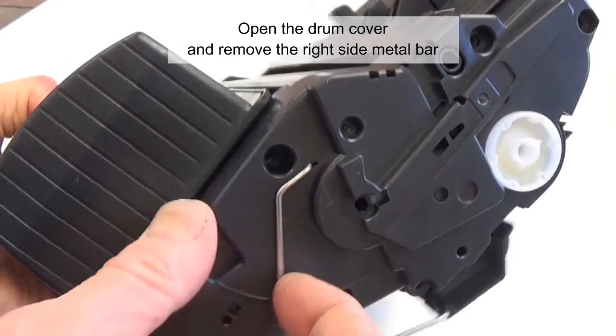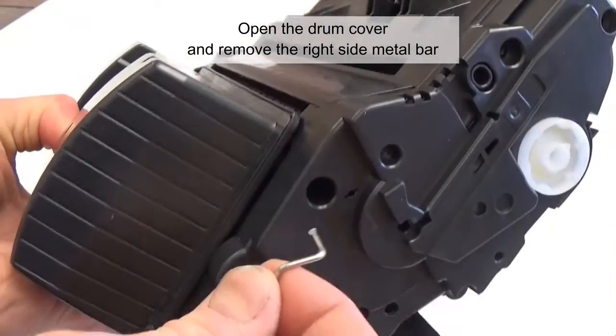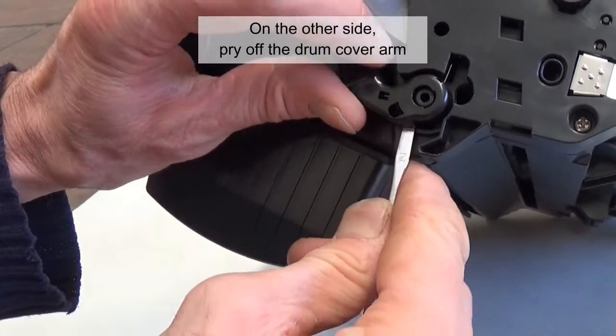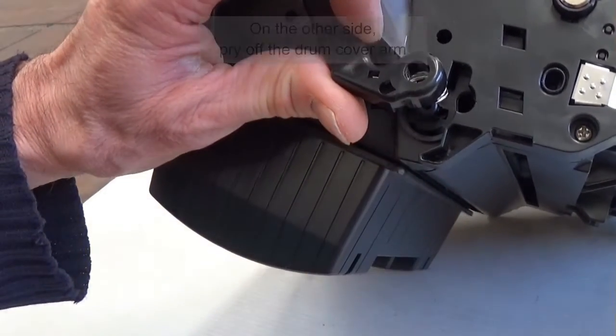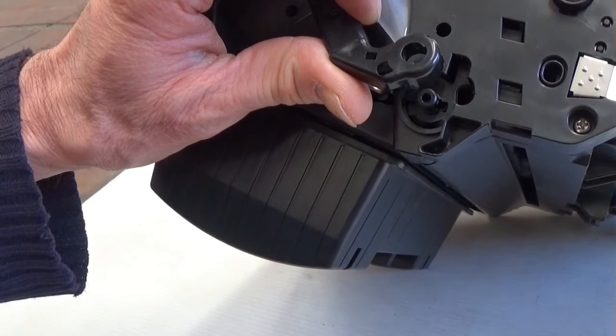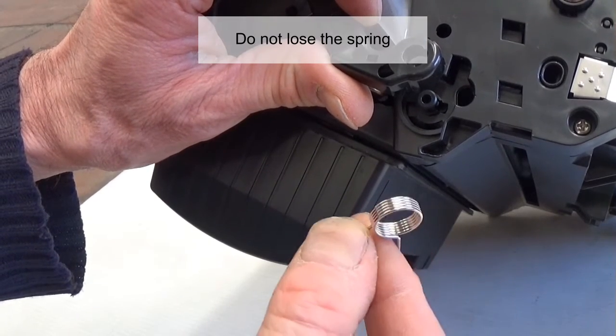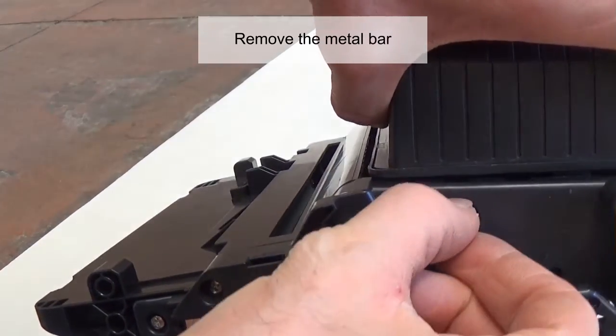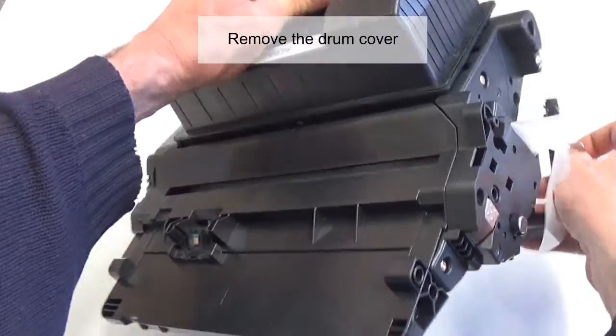Open the drum cover and remove the right side metal bar. On the other side, pry up the drum cover arm. Do not lose the spring. Remove the metal bar and remove the drum cover.